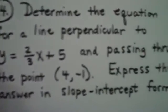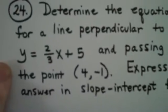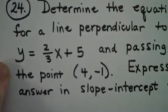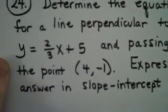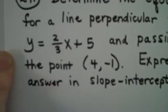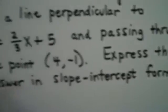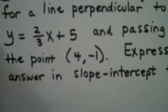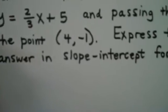Question 24. Determine the equation of a line that is perpendicular to y = 2/3x + 5 and passes through the point (4, -1). Express the final answer in slope-intercept form.